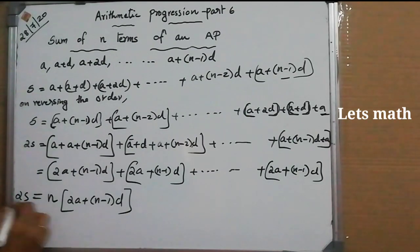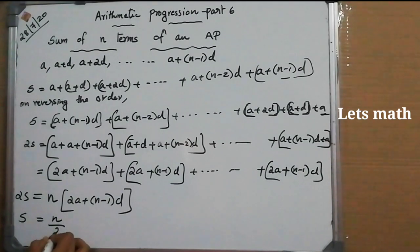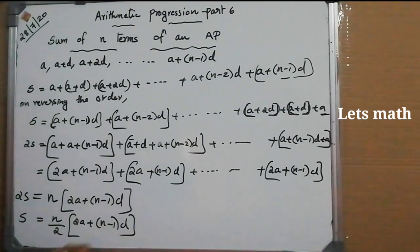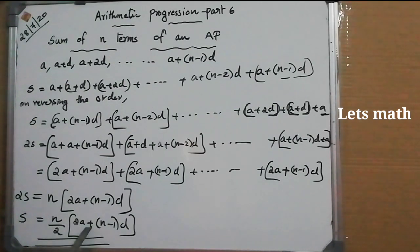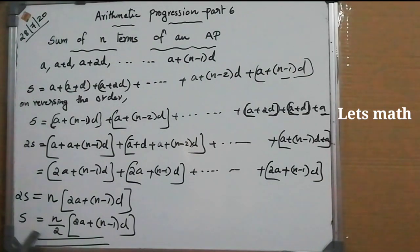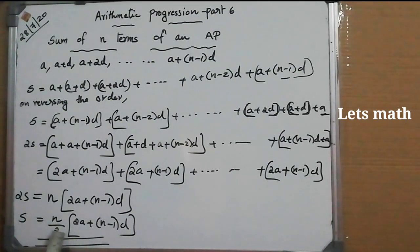There are four quantities: S, N, A, and D. If you know any three of them, you can find the fourth using the formula Sn = N/2 × [2A + (N-1)D].